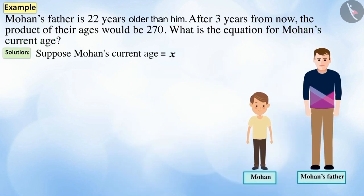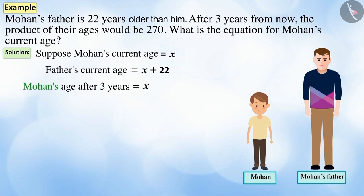Let Mohan's current age be x years. Then, his father's age would be x + 22 years. Mohan's age after 3 years would be x + 3 years, and his father's age after 3 years would be x + 22 + 3, i.e., x + 25.